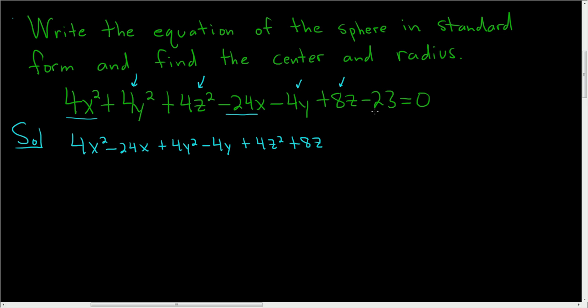And lastly, we have 4z squared plus 8z. And let's go ahead and add the 23 to the other side. So plus 23, and it's gone.